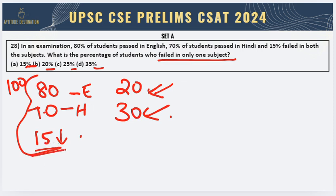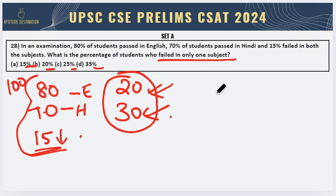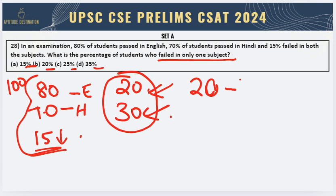Now these are the students who have failed in both English and Hindi. So basically, if I have to find the people who have failed only in English, I'll say 20 minus 15. I hope this concept is clear — which means 5 students have failed only in English.